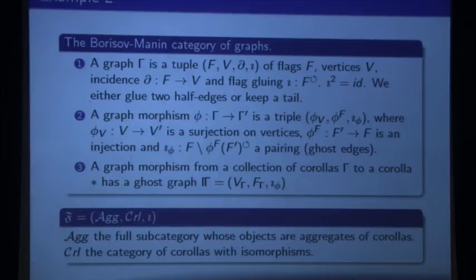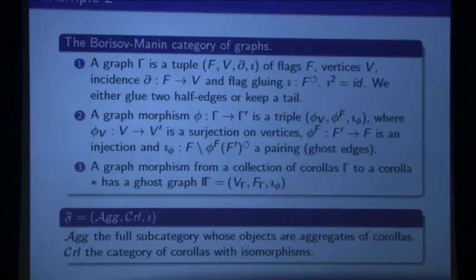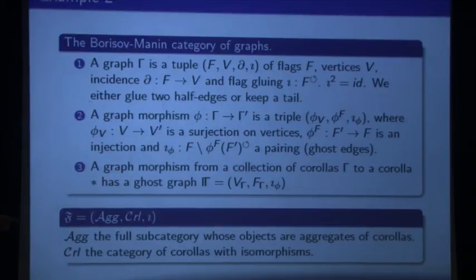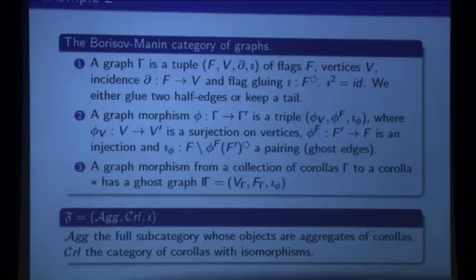I call it the ghost graph. If I look at all the flags that disappeared, they all have to get paired, and this gives me a graph — the ghost graph. For the morphism where I contract edges, the ghost graph is just that graph. The very important thing: the way Feynman categories are set up, if you have examples dealing with graphs, the graphs are morphisms, not objects. The objects are just stars — agglomerates of corollas. The graphs come in as the ghost graph of these morphisms. A corolla is a one-vertex, no-edge graph, and an aggregate is a disjoint union of these.